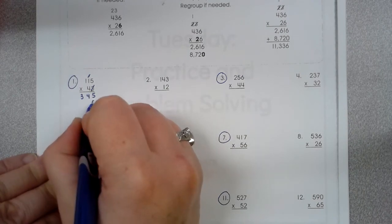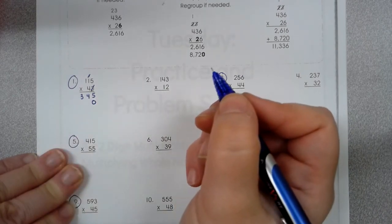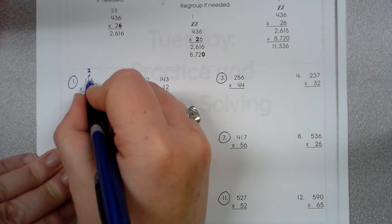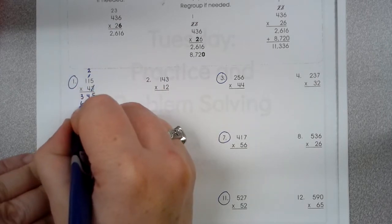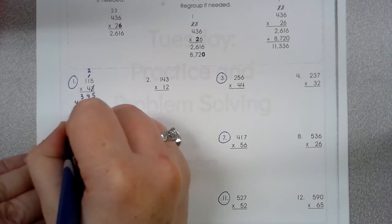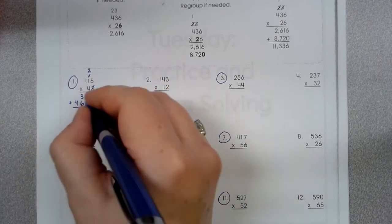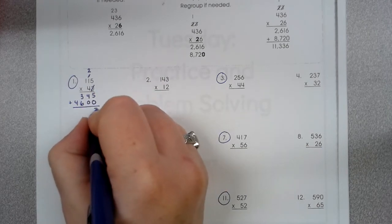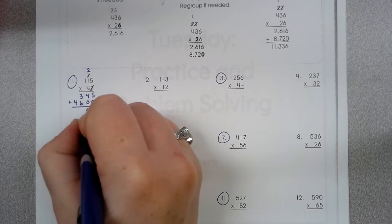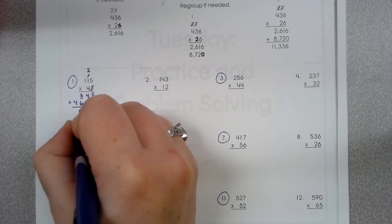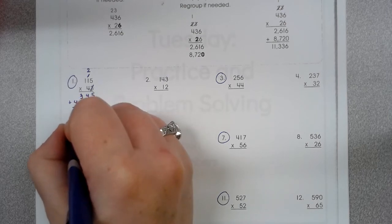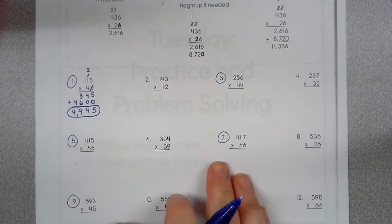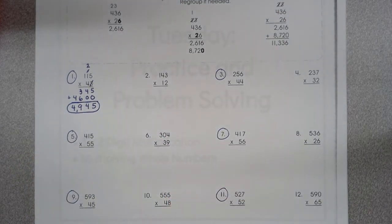So now I'm going to the 10s place. So I'm going to put a 0 here and start with my 4. 4 times 5 is 20, carry my 2. 4 times 1 is 4, plus 2 is 6. 4 times 1 is 4. 5 plus 0 is 5. 4 plus 0 is 4. 3 plus 6 is 9. 4 and nothing is 4. So once you get it, you need to circle your answer just like that. And your answer should be 4,945.